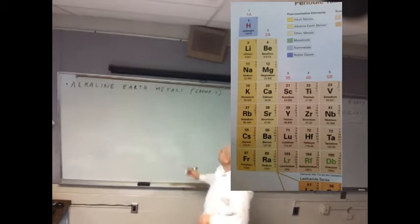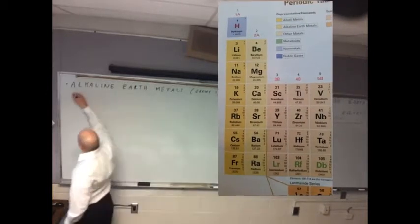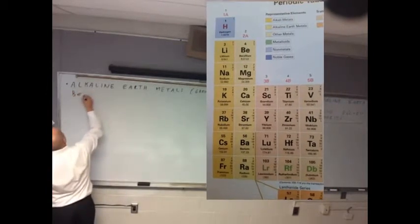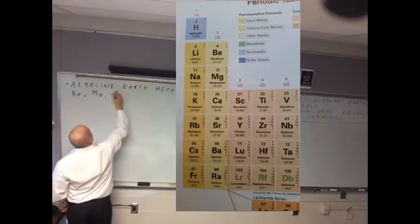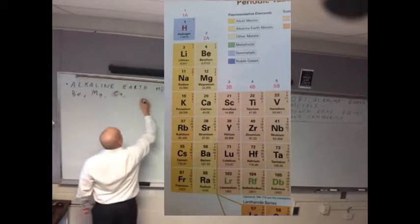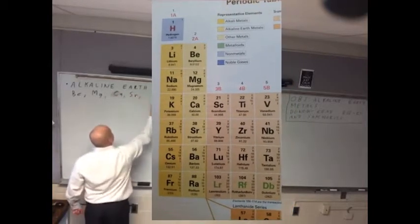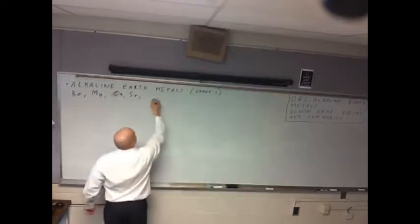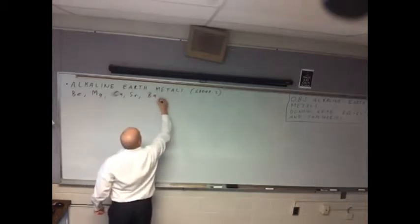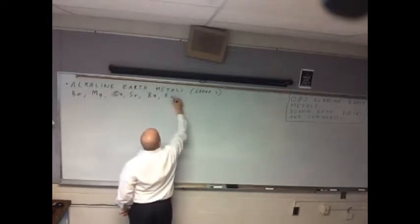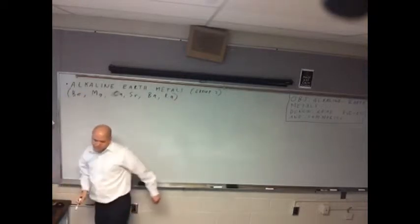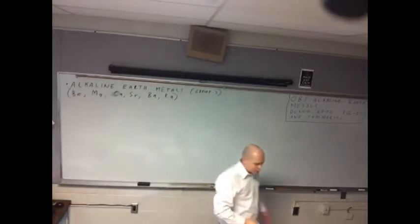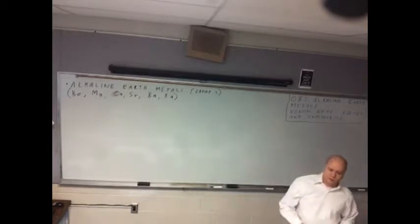So that's beryllium, magnesium, calcium, strontium, barium, and radium. So those are the six alkaline earth metals, not to be confused with alkali metals which we talked about earlier.